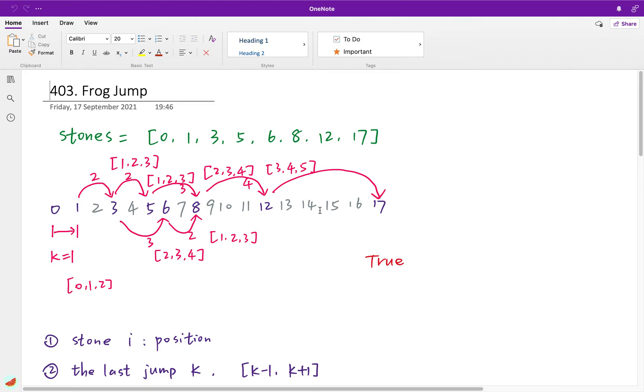It asks us whether we can jump to the very last stone. And it also says that the first jump is 1. So if the first jump is 1, then the next jump range will be 0, 1, 2. Then we jump 2. Because if we jump 1, there is no stone in position 2, so we cannot jump there.